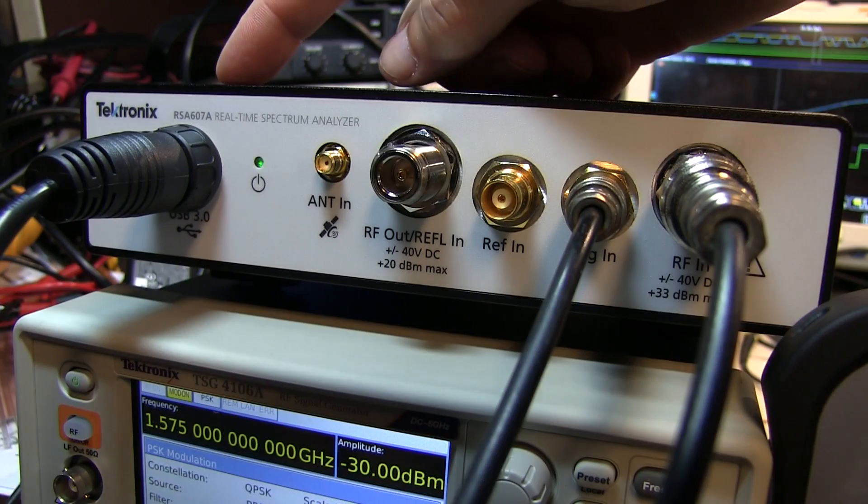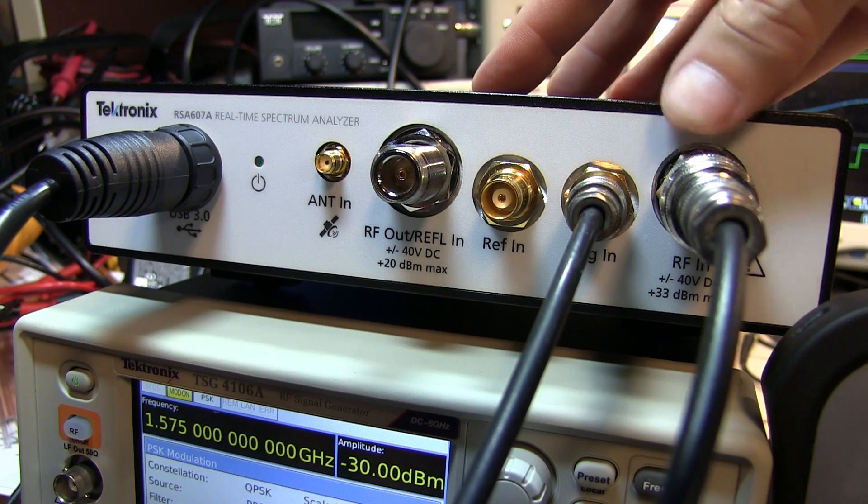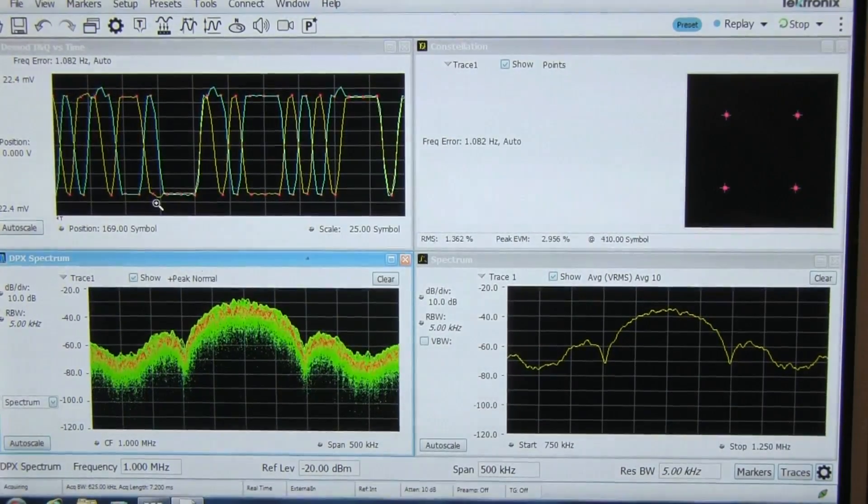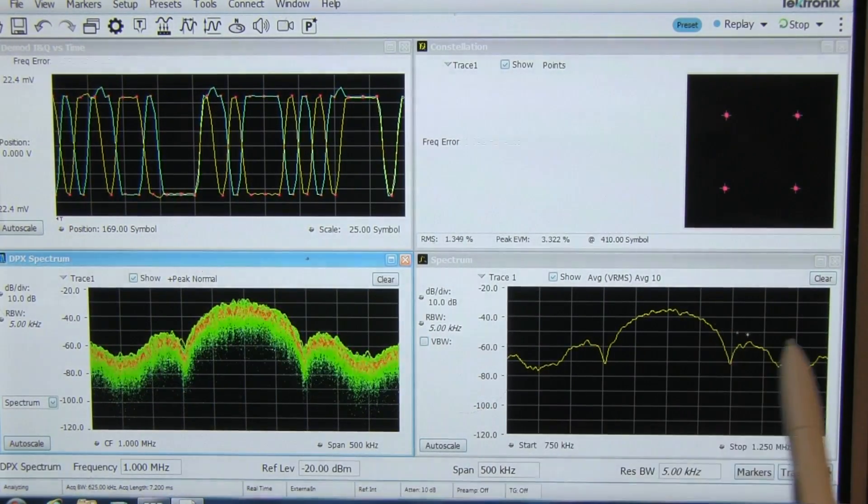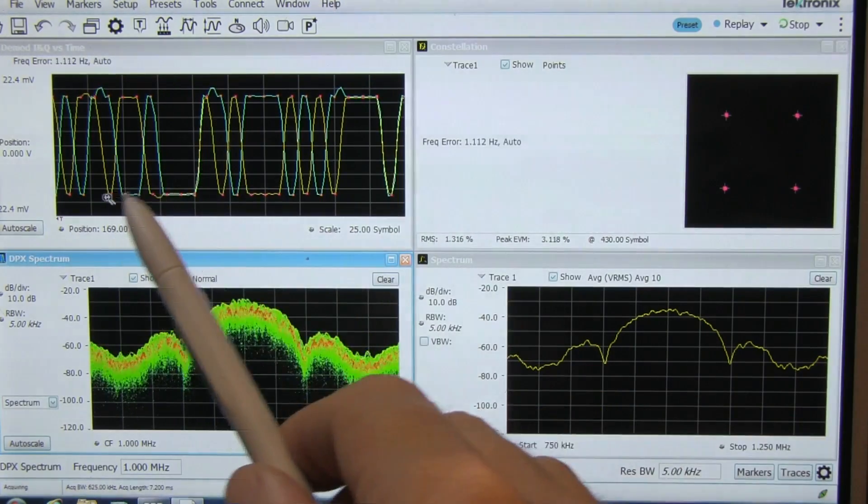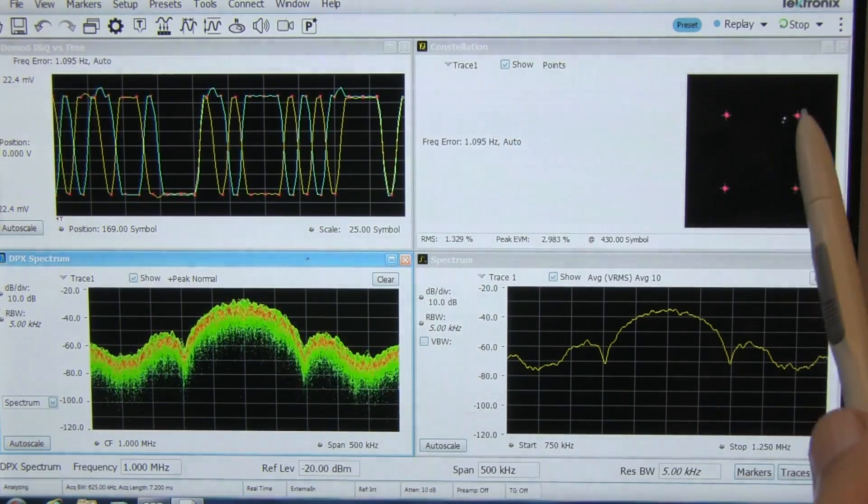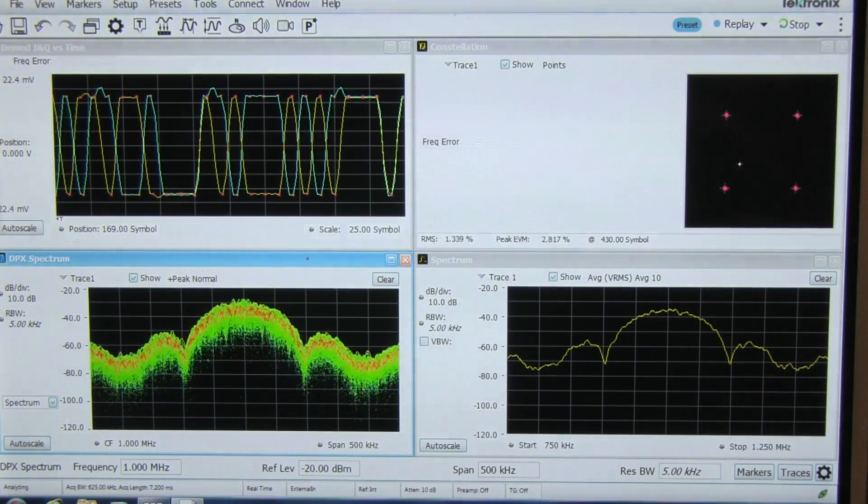I am using my Tektronix RSA607A real time spectrum analyzer to take a look at the effect of some impairments on the IQ modulator. We are looking at a couple of different views of this modulated signal. There is the average spectrum, the live real time spectrum, the demodulated I and Q waveforms, and the constellation diagram, which essentially shows the four phases of this RF signal.